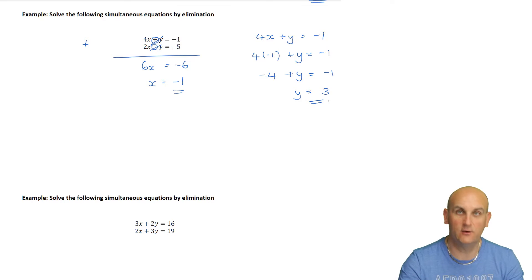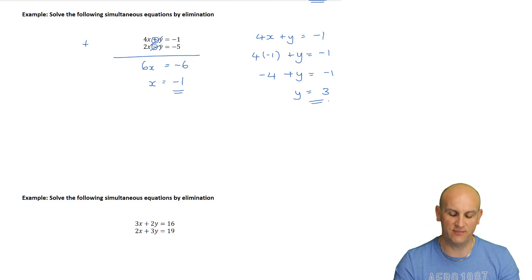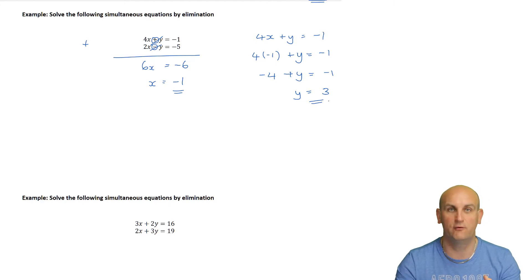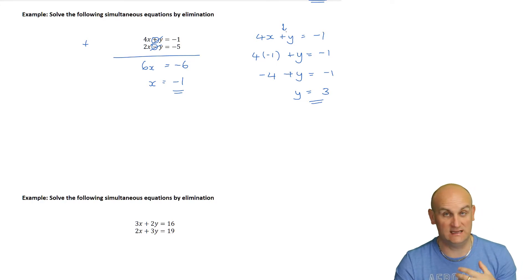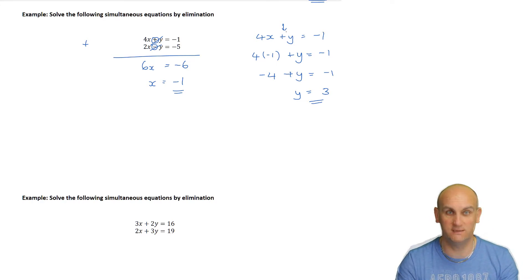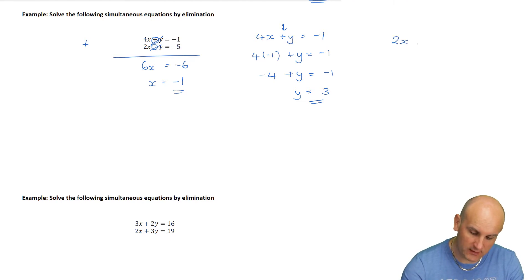4 times negative 1 plus y equals minus 1. Minus 4 plus y equals minus 1, so y equals 3. And I must go back and check. What you don't know is that I deleted and re-recorded this because I'd made a mistake - I substituted in the wrong sign, misreading a plus for a minus and ending up with wrong values.